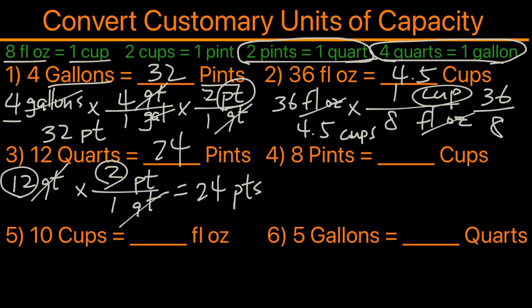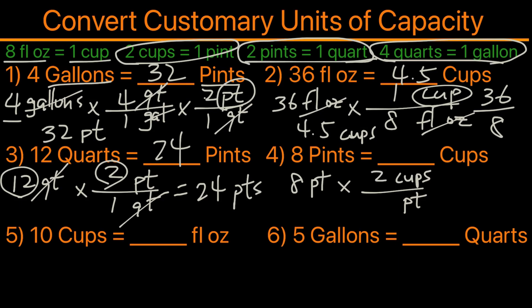For the fourth example we have 8 pints and we're converting to cups, using the conversion shown. We set up pints on the bottom and cups on top. Two cups equals one pint, the pints cross out and we're left with cups. Eight times 2 is 16, so that's 16 cups.